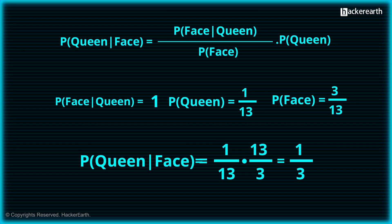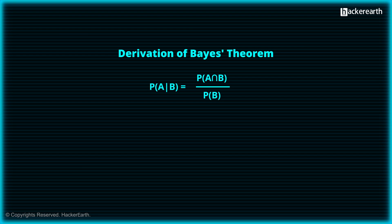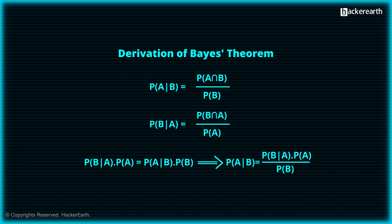Therefore P(Queen|Face) = (1 × 1/13) / (3/13) = 1/3. The derivation of Bayes' theorem is straightforward. The conditional probability P(A|B) = P(A ∩ B) / P(B), where P(A ∩ B) is the joint probability of events A and B. Similarly, P(B|A) = P(B ∩ A) / P(A). Combining both equations: P(B|A) × P(A) = P(A|B) × P(B). Rearranging gives P(A|B) = P(B|A) × P(A) / P(B), and hence Bayes' theorem is derived.